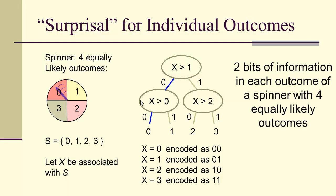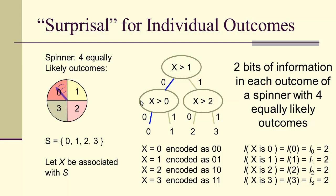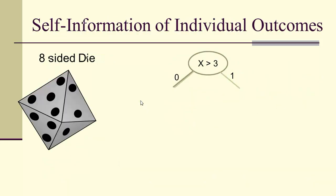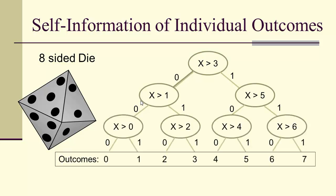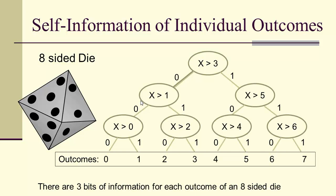This means we need two bits of information for each outcome of a spinner with four equally likely outcomes — the self-information for each outcome is two bits. For an eight-sided die, the decision tree uses x > 3, x > 1, x > 5, and so on, giving eight outcomes. There are three bits of information for each outcome: for example, 2 is encoded as 010 and 7 as 111.